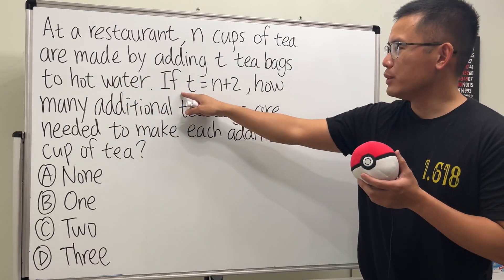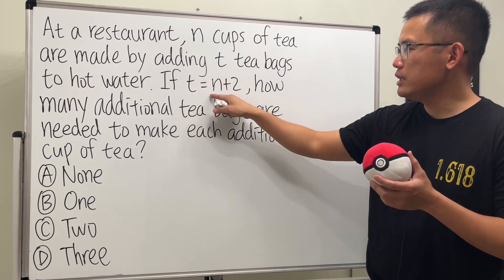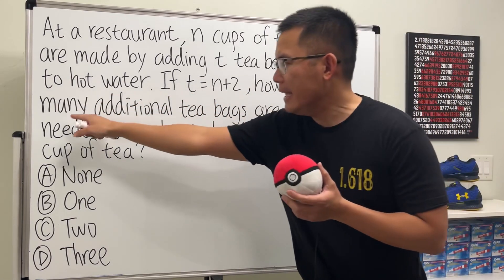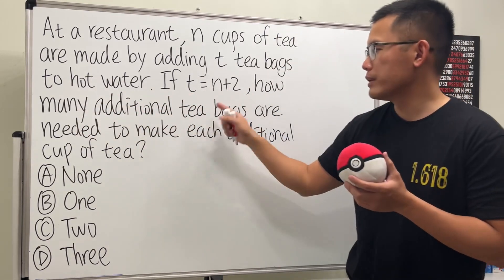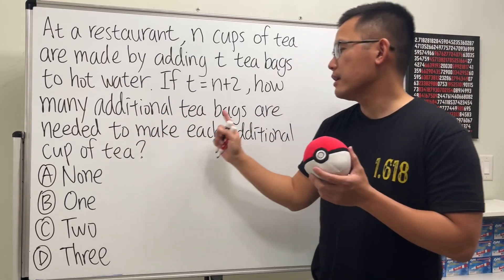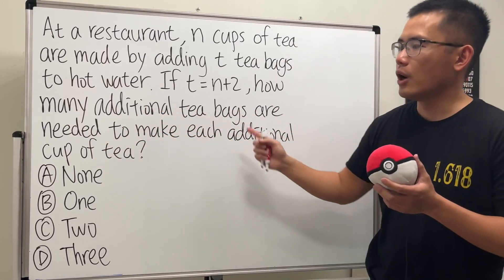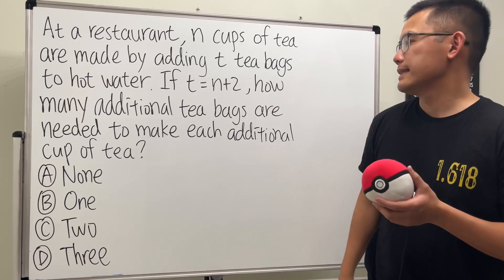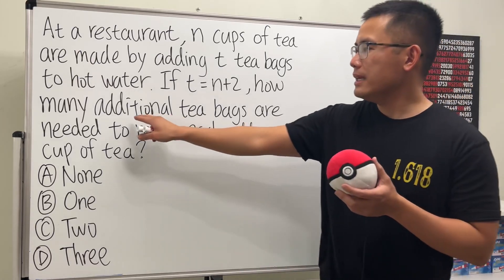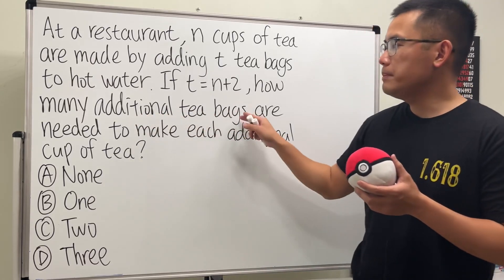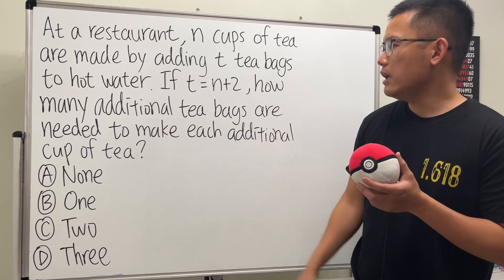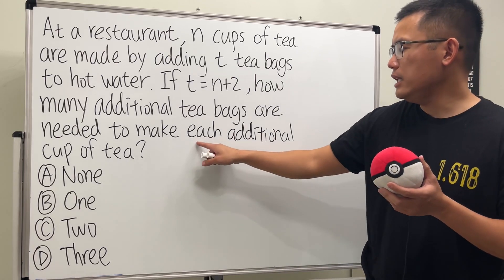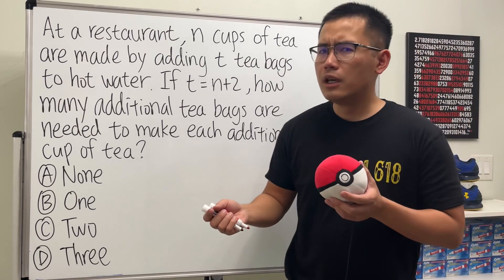We are given this equation: t is equal to n plus 2. And we are going to find out how many additional tea bags are needed to make each additional cup of tea. So that's the tea, and we want to make each additional cup of tea.